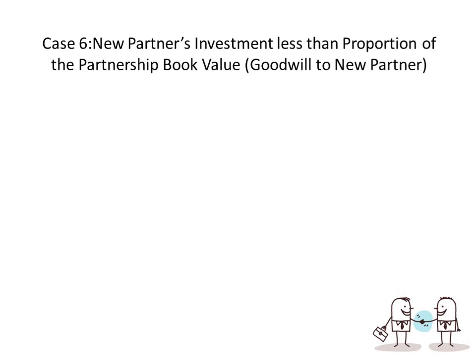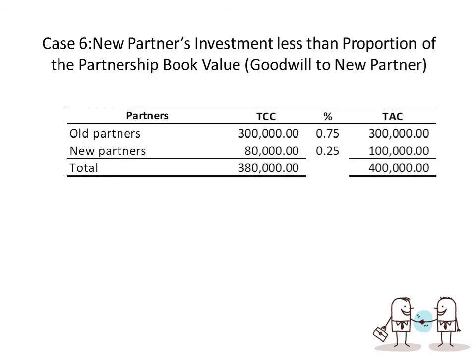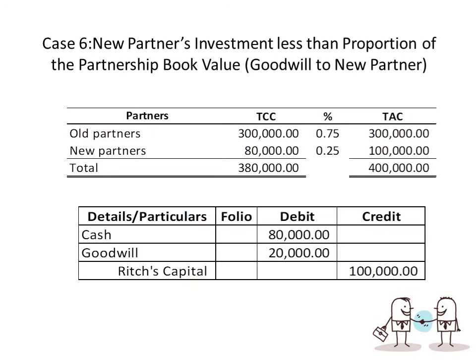Case 6 — Goodwill to new partner: new partner's investment is less than the proportion of the partnership book value. Old partners $300,000, new partner Rich pays $80,000 — total contributed $380,000. $300,000 ÷ 75% = $400,000, so old partners' total agreed is $300,000 and 25% of $400,000 = $100,000 for the new partner. The goodwill to the new partner is $100,000 − $80,000 = $20,000. Entry: debit cash $80,000, debit goodwill $20,000, credit Rich Capital $100,000.